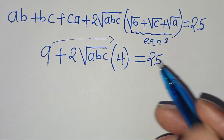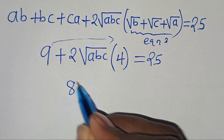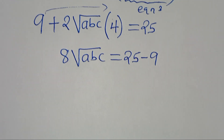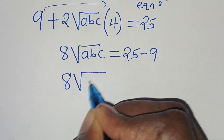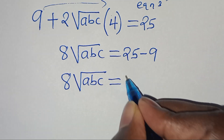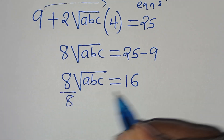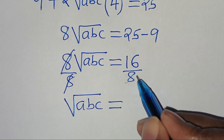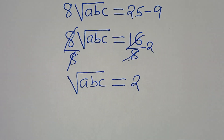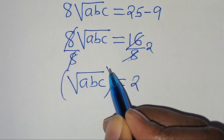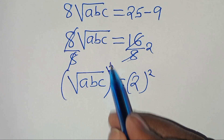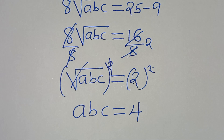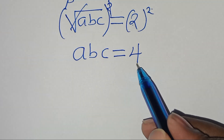So we have 9 + 2·4·√(abc) = 25, which gives 8√(abc) = 16. Dividing both sides by 8: √(abc) = 2. Squaring both sides: abc = 4.